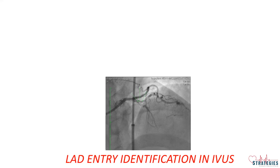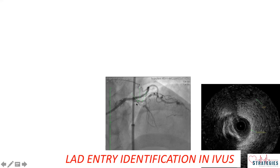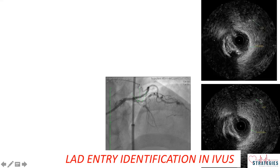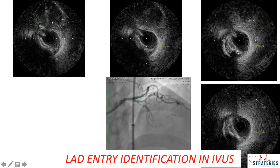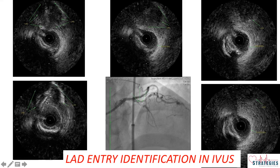Coming to the LAD entry identification in IVUS, while coming through RAMUS we can observe this is the site of LAD, and we can see gradually this becomes a circle and then joins the diagonal. This is the LAD here, and in the next shot a complete circle is visible — this is LAD, this is the media, and this is the true lumen, joining diagonal. There was a suspicion of a nipple, but if you see in IVUS there is a small entry or nipple which is visible into LAD with blood sparkling into the LAD — so this is the entry point.